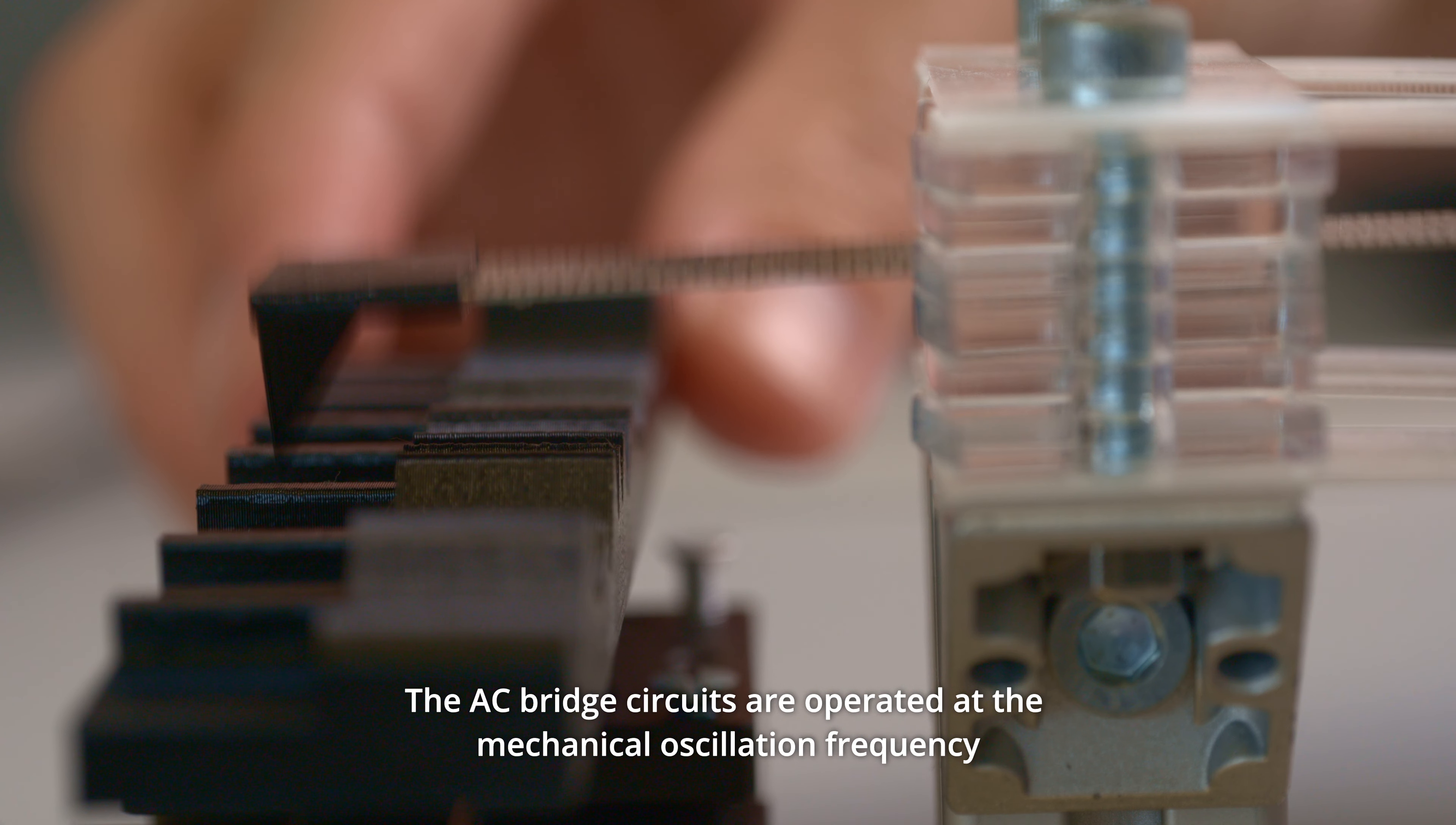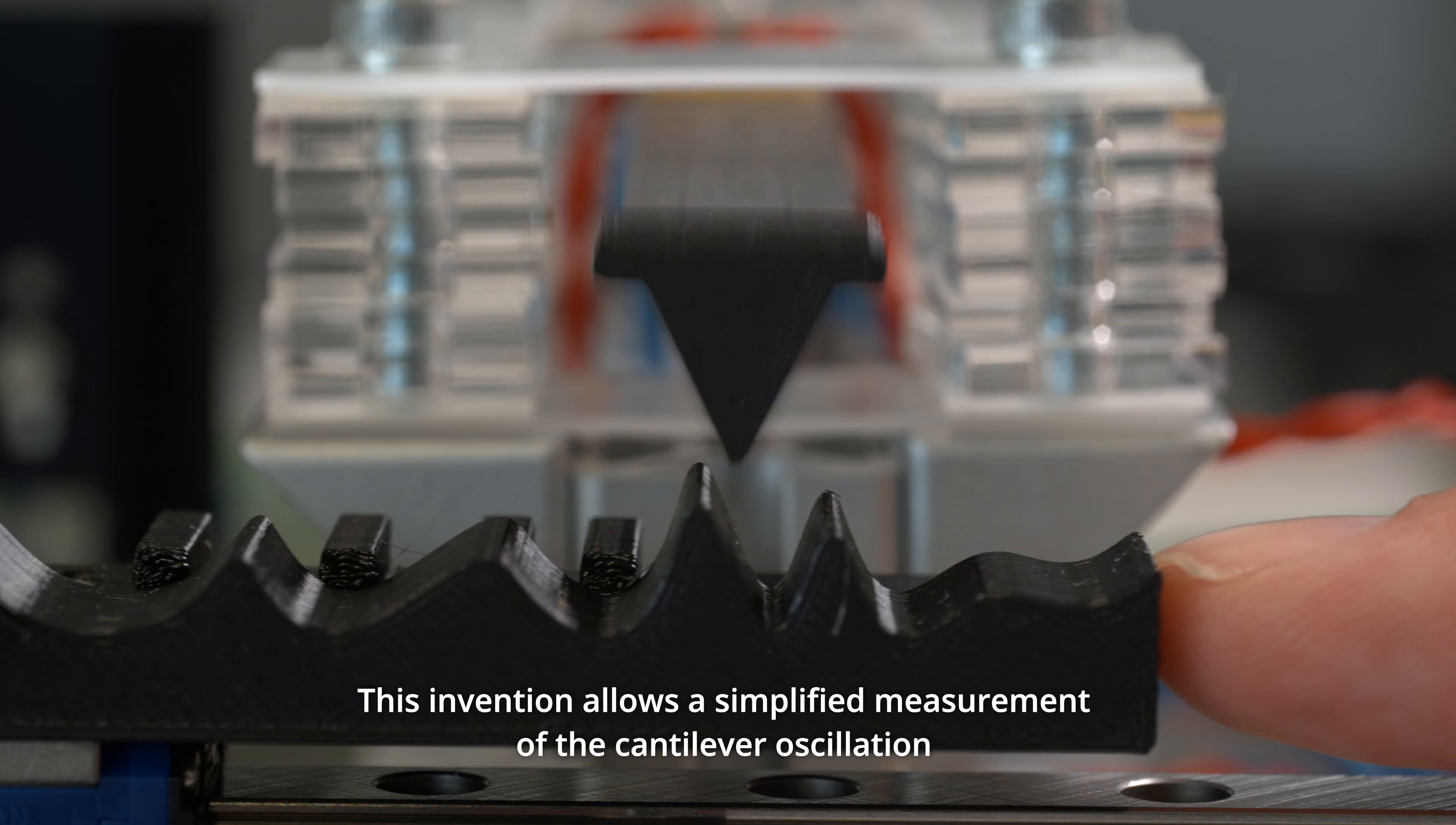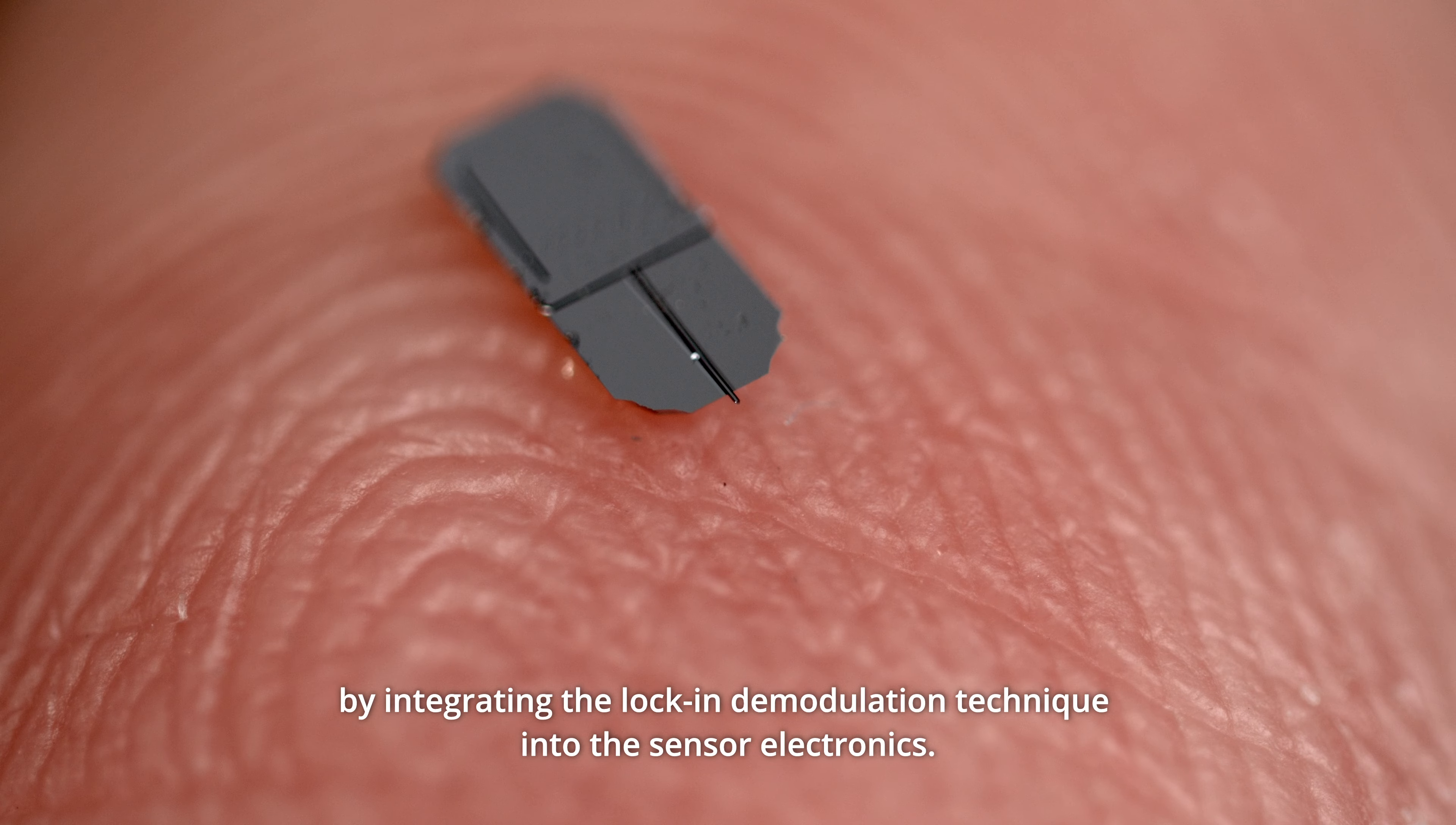The AC bridge circuits are operated at the mechanical oscillation frequency, which leads to a direct demodulation at the bridge output voltage. This invention allows a simplified measurement of the cantilever oscillation by integrating the lock-in demodulation technique into the sensor electronics.